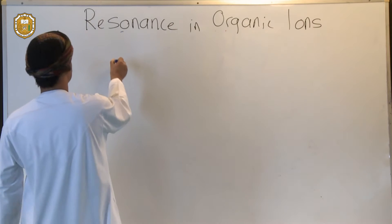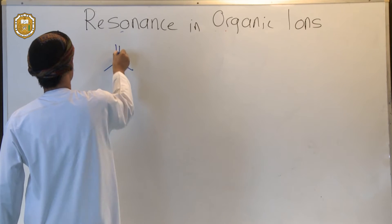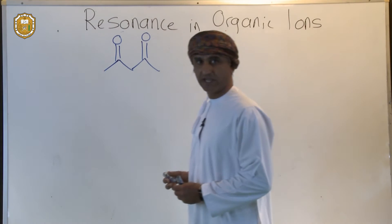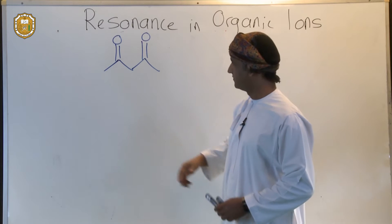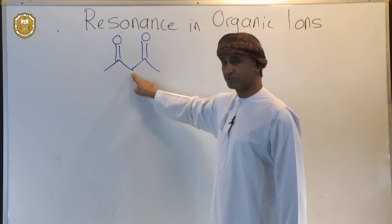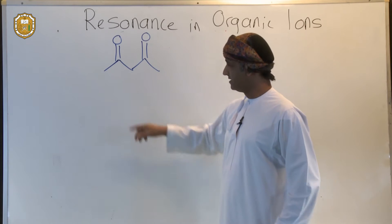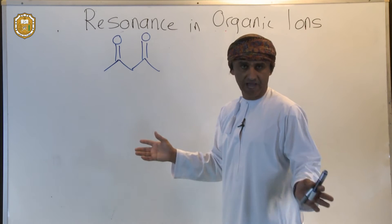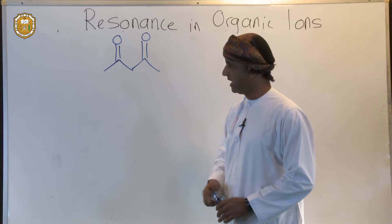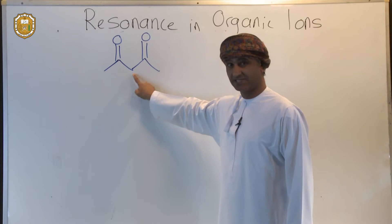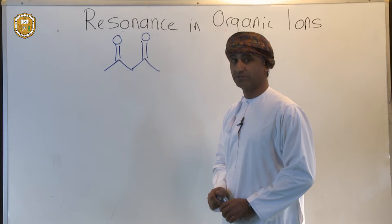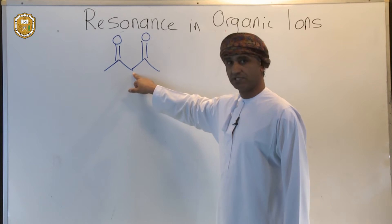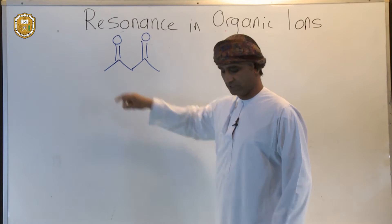Let's take beta-ketoester. This is an example of a beta-ketoester, and if you look at it, it's actually acidic at two positions — this position and that position flanked by the two carbonyl groups. The pKa of the normal alpha position is about 20, which is typical of a normal alpha hydrogen in a carbonyl compound.